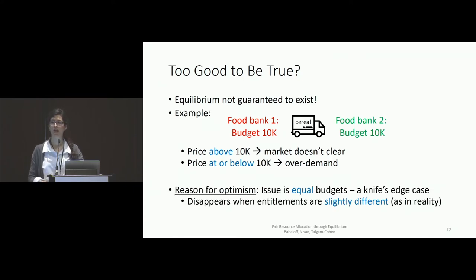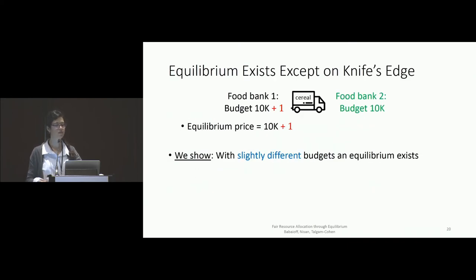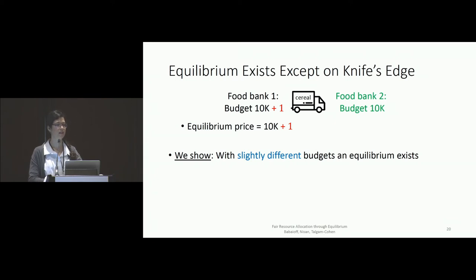The reason we remain optimistic about this solution concept is that the issue here is the equal budgets — we view this as a knife's edge case that will disappear once the entitlements, the budgets representing entitlements, are slightly different, which is usually what happens in practice. In our example, if the first food bank has a slightly higher budget, you can set the price to that slightly higher budget and get an equilibrium. We show in the paper that more generally, in markets with many different items, preferences, and so on, you get equilibrium existence once you have slightly different budgets. We formalize this as a theorem about budgets with very small perturbations added to them.